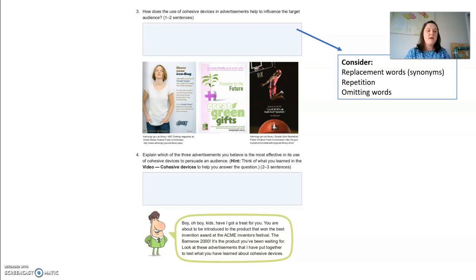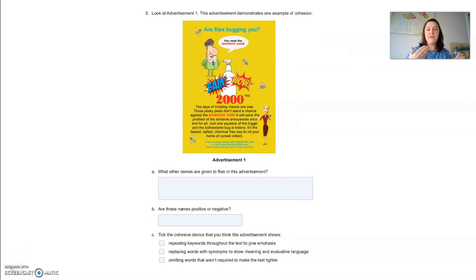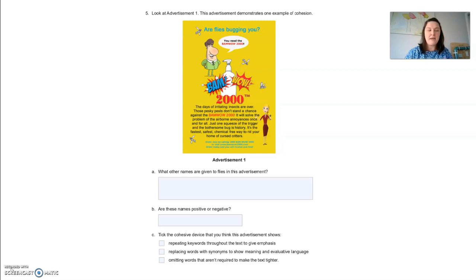Look at advertisement one and demonstrate one example of cohesion. If you scroll down to question five, look at this advertisement — it demonstrates one example of cohesion quite well. What you need to do is name other names that are given to flies in this advertisement. I'm going to quickly read through it and you're going to list the names given to flies. They're using replacing words with synonyms.